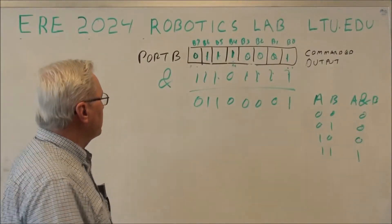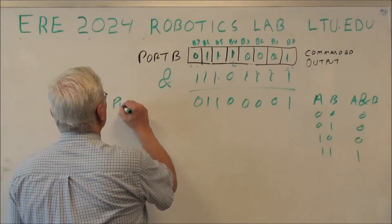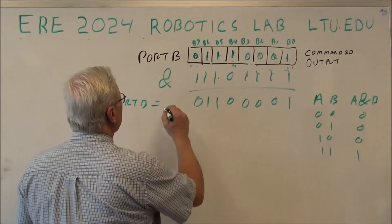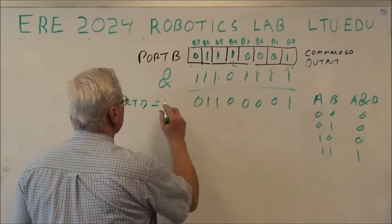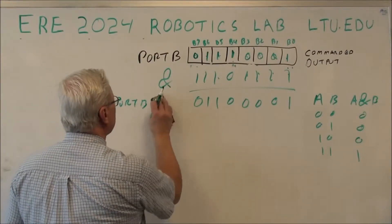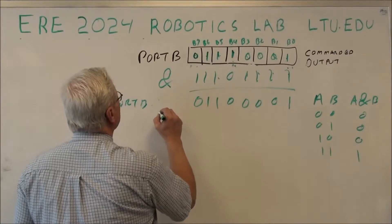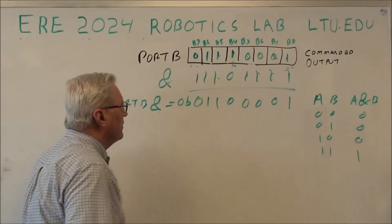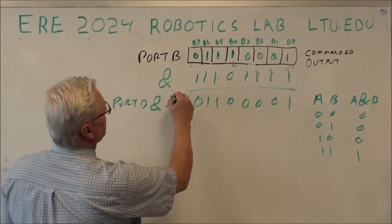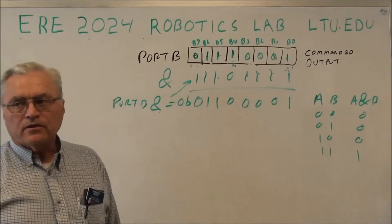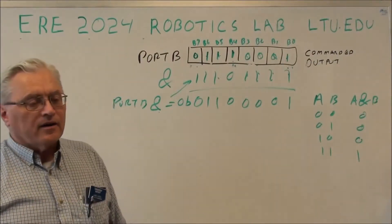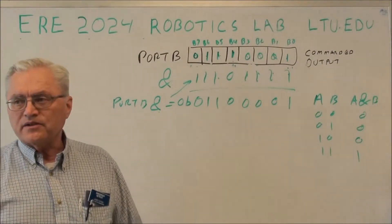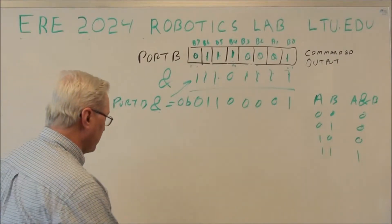So I could write that out as port B AND equals 0B, you know, writing this out the hard way. Now how do I shift the 0 into 1s or something like that? Is there a simple way to do that? Well, it turns out there is.